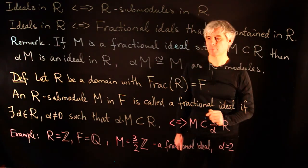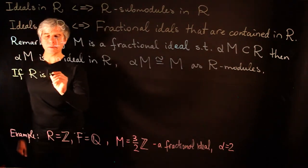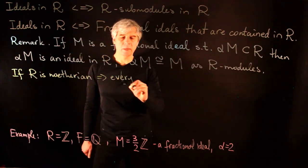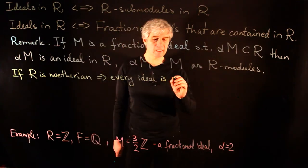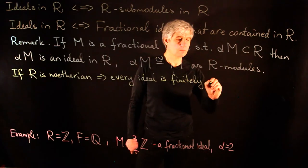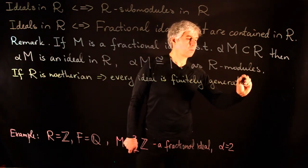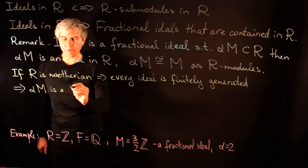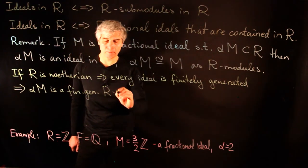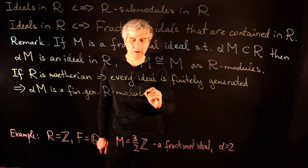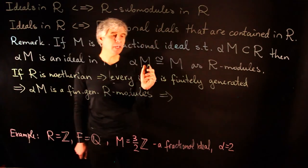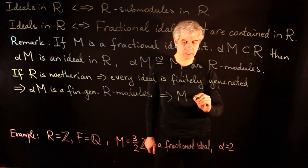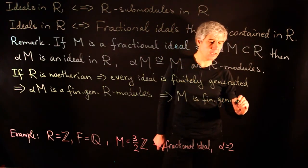So if the ring R is Noetherian, then every ideal is finitely generated. This implies that if M is a fractional ideal, then αM is a finitely generated R-module. And because αM is isomorphic to M as R-modules, any fractional ideal M is finitely generated as an R-module.